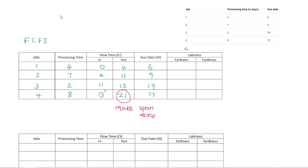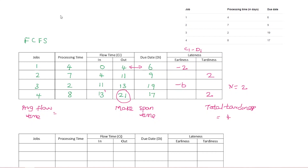Checking lateness: if you finish before the due date, that is earliness. Due date 6 — the flow time is 4, so 4 minus 6 gives minus 2, meaning 2 days early. Subtract to get the difference of 4. Total flow time sum: 4 plus 11 plus 13 plus 21 equals 49. 49 divided by 4 equals 12.25 — that is the average flow time. Max span time is 21. Total tardiness is 4. Number of late jobs is 2.